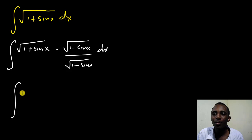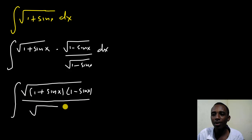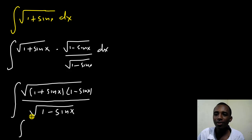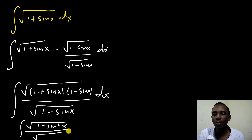This now becomes the integral of the square root of (1 plus sine x)(1 minus sine x) — these two square roots multiply together — all divided by the square root of 1 minus sine x. Inside the square root on top, you can see there is a difference of two squares, giving us the square root of 1 minus sine squared x in the numerator.